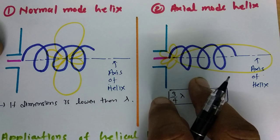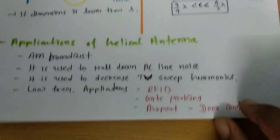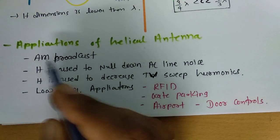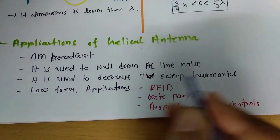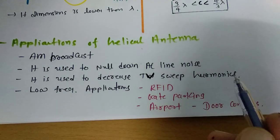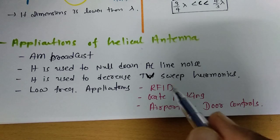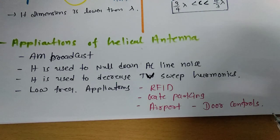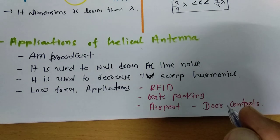Few applications of helical antenna: it can be utilized in AM broadcast, it is used to null down AC line noise, it is used to decrease TV sweep harmonics, and for low frequency applications such as RFID, gate parking, airport security, and door controls. There are so many applications, and this is where we use the helical antenna.